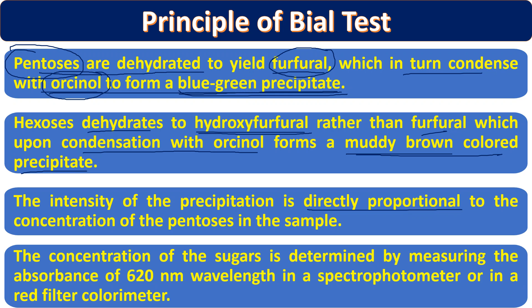The intensity of the color — whether blue-green or muddy brown — is directly proportional to the concentration of the component present in the test sample. More pentose gives a more intense blue-green color; more hexose gives a more intense muddy brown color. The concentration of sugar is determined by measuring the absorbance at 620 nanometer wavelength in a spectrophotometer or a red filter colorimeter.